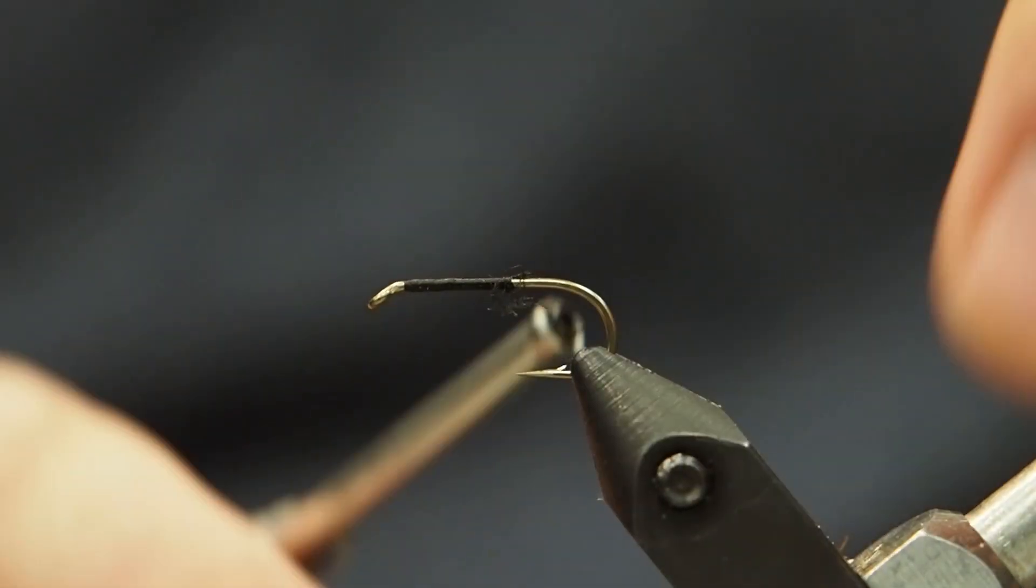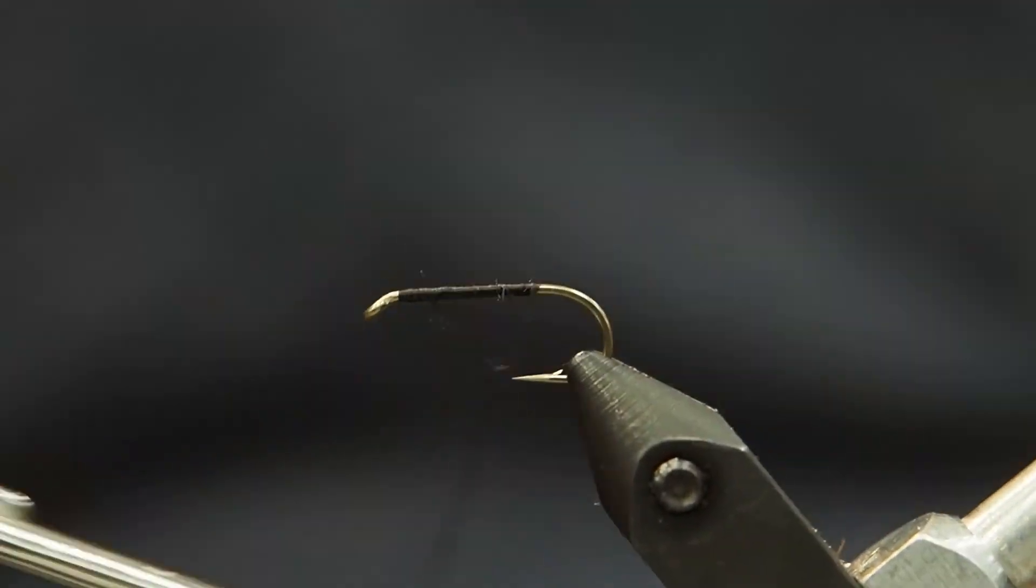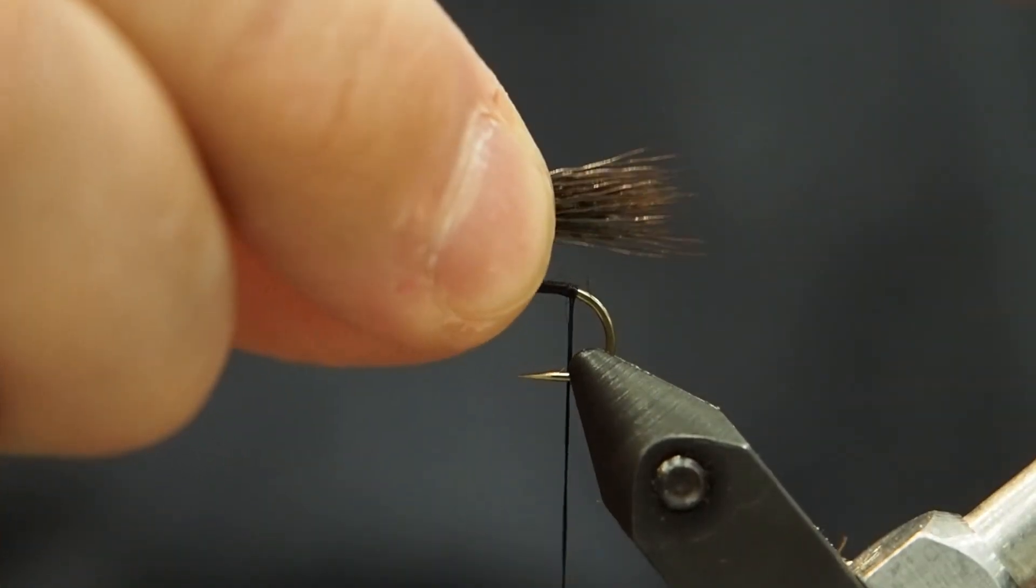Now we are still going to use deer hair for the tail. I like to use a dark material. You could use moose mane or something like that. We've got a nice dark brown deer hair here, good size clump.